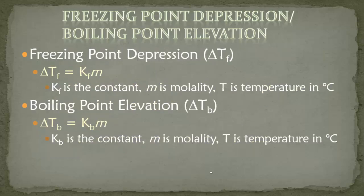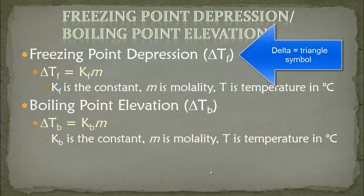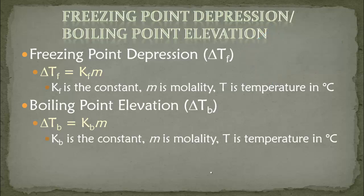So what are the equations? For freezing point depression, delta means a change, so the depression is how much the temperature has changed at freezing. Delta Tf equals KF times M, where KF is your constant, M is your molality, and T is temperature. The temperature is in degrees Celsius, so there's no need to convert to Kelvin.